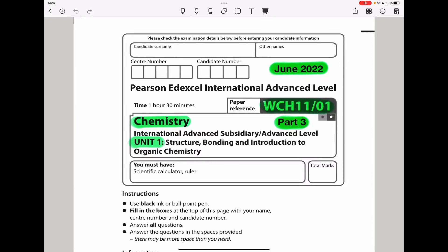Welcome to the Chemistry, Biology, and Math Revision Hub. Today we are doing the Pearson Edexcel International A-Level Chemistry Unit 1 for June 2022. This is the Part 3 video. I'll put the link to Part 1 and Part 2 in the description box below. Let's begin.